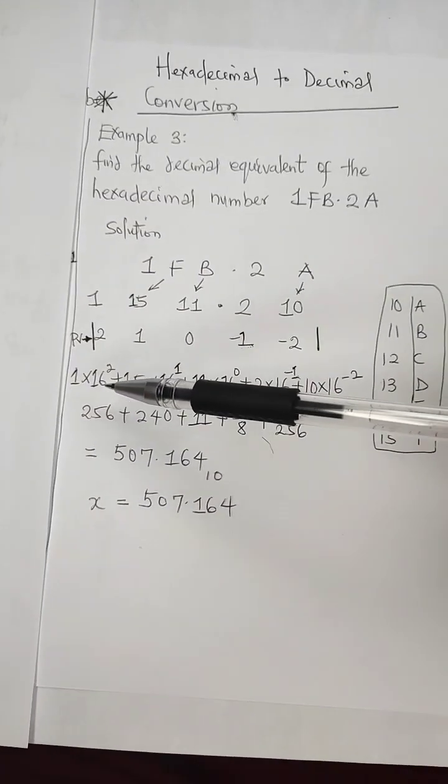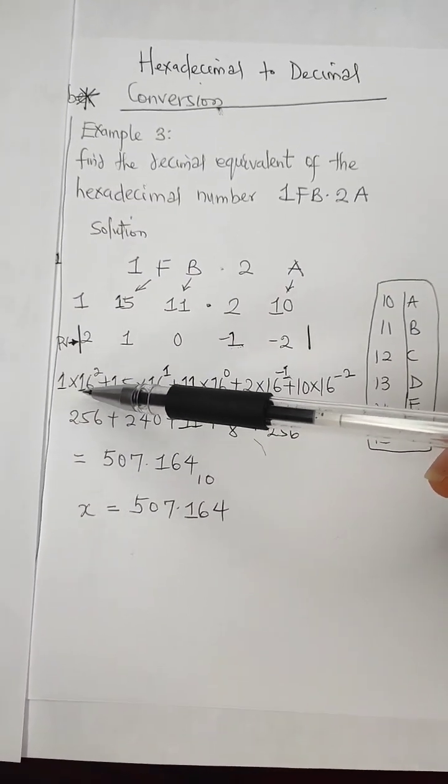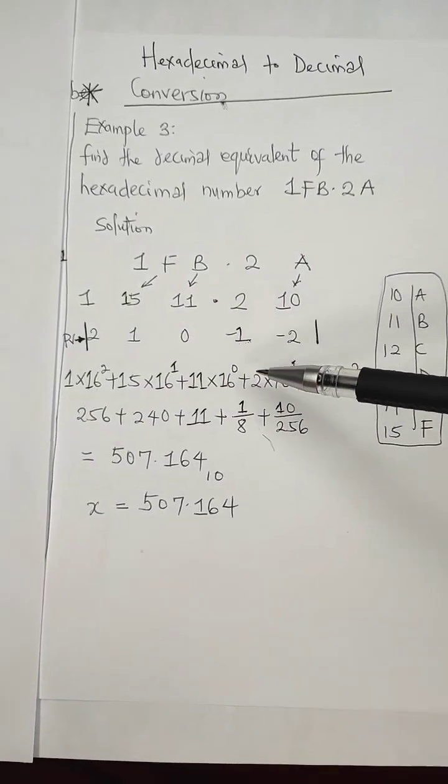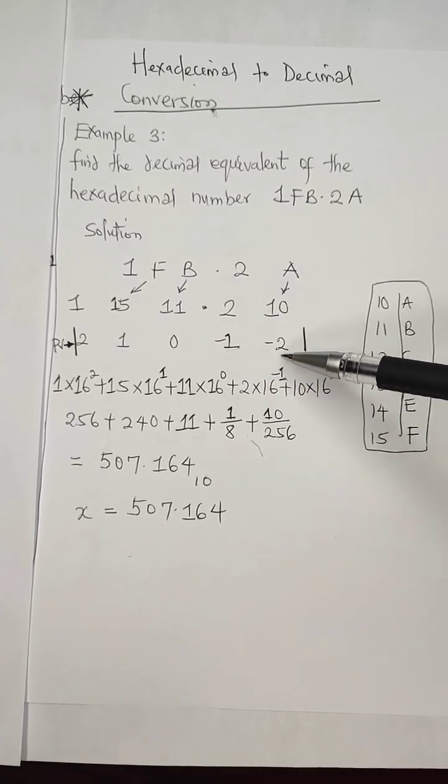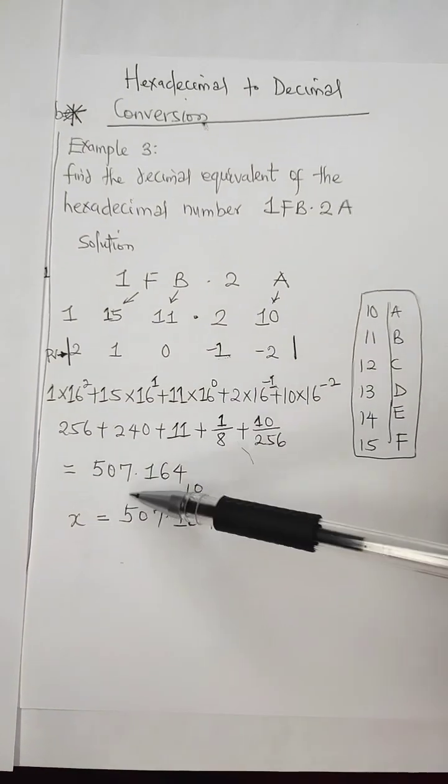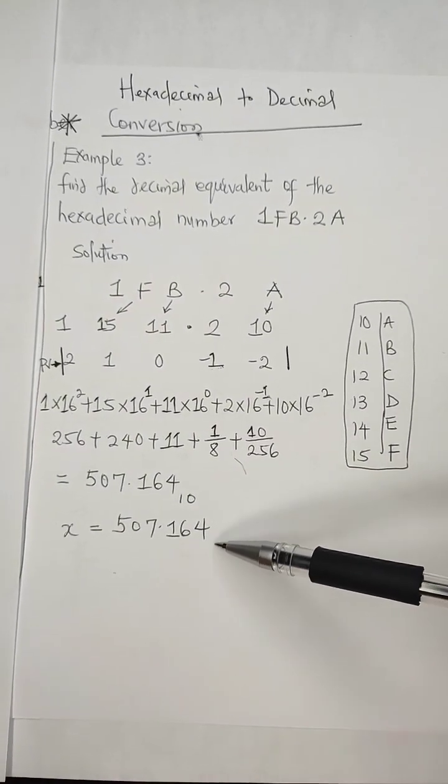Then we go through the multiplication process where we have 1 times 16 raised to the power 2 plus 15 times 16 raised to the power 1 plus 11 times 16 raised to the power 0 plus 2 times 16 raised to the power minus 1 plus 10 times 16 raised to the power minus 2. If we sum all this, we are going to have 507.164.